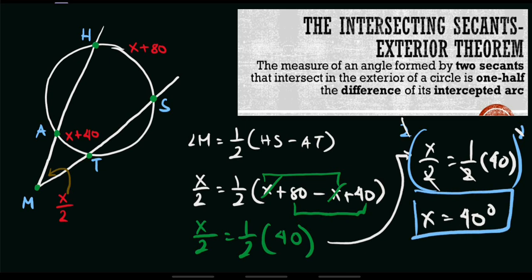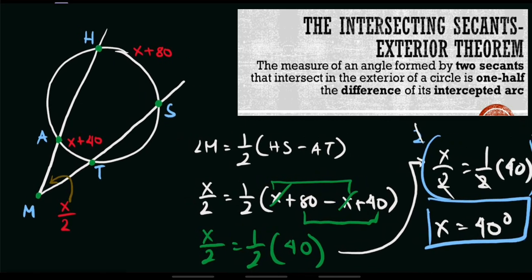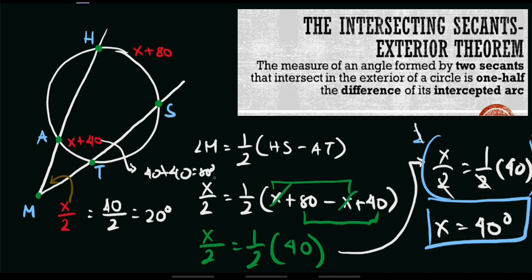Now, if you are asked to solve for the value of angle M, and the value of x is 40, just substitute: angle M equals 40 divided by 2, so M is equal to 20 degrees. For arc BC, which is x plus 40: 40 plus 40 equals 80 degrees. And for arc HS, which is x plus 80: 40 plus 80 equals 120 degrees. You can use these to double-check your answer.